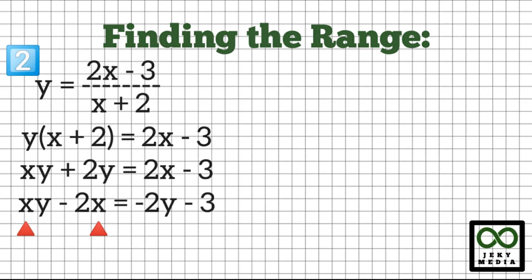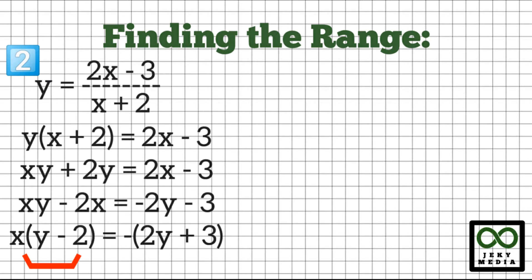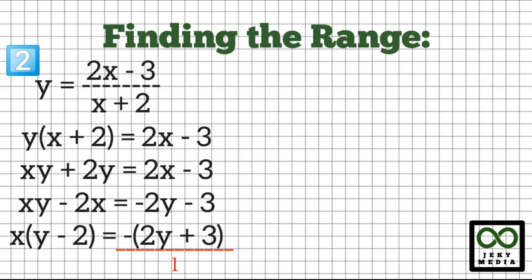Let's take out x on the left side: x times (y minus 2). Extracting negative 1 on the right side will give you the negative value of (2y plus 3). We know that every number has an invisible denominator of 1.